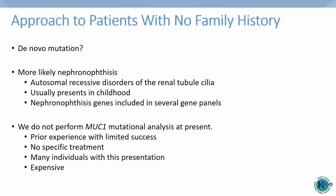Some patients may have symptoms of ADTKD but no affected family members. These individuals could have a de novo mutation; however, it is more likely they have nephronophthisis, an autosomal recessive condition associated with mutations in renal tubule cilia proteins, usually presenting in childhood. Nephronophthisis genes are included in several gene panels. At present, we do not perform MUC1 mutational analysis for individuals with no family history, as we've had very limited success with testing in that setting. When we have a specific treatment for this disease, I think we will do a lot more testing of individuals without family history.